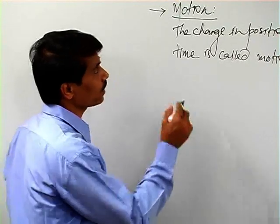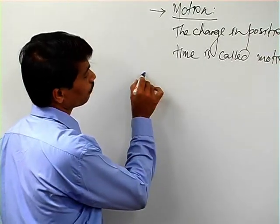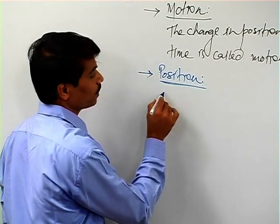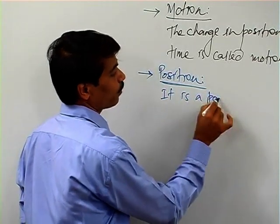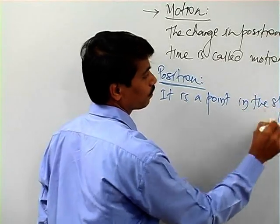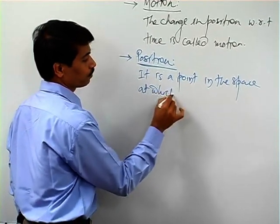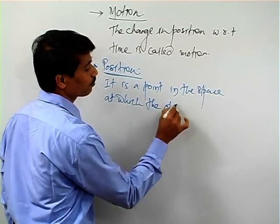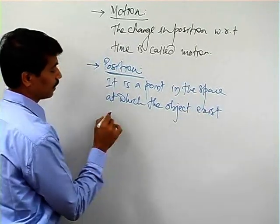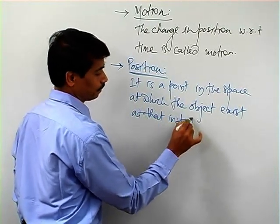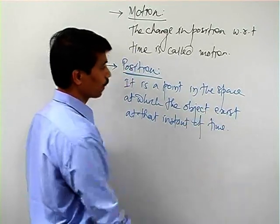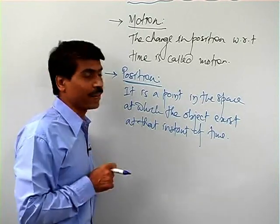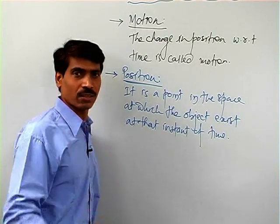Now, change in position - what is the meaning of position? Position means it is a point in the space, the place at which the particle or object exists at that instant of time. Where is that particle? Where is the object? That point is called the position of that object.